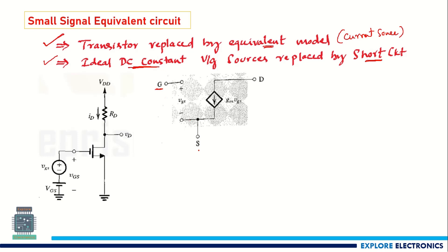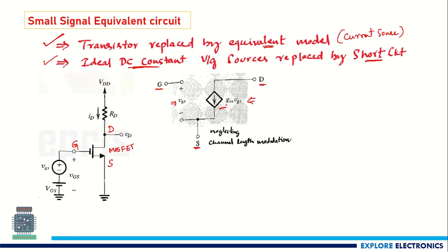In the small signal equivalent circuit, we have the gate terminal, source terminal, and drain terminal. The MOSFET between drain and source is replaced by a current source. At the gate terminal, gate current I_G equals zero, but we have V_GS, the applied small signal. So there is an open circuit between gate and source with small signal V_GS, and a controlled current source between drain and source.